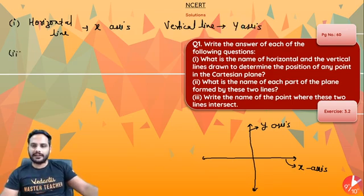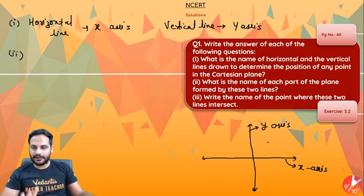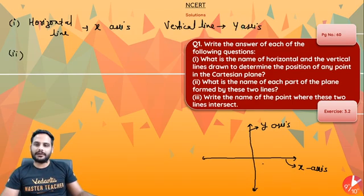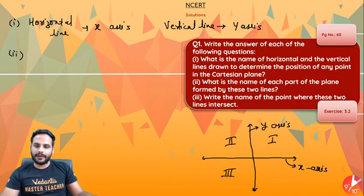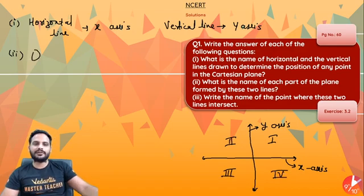Second part: what is the name of each part of the plane formed by these two lines? So these two lines divide the plane into four parts, and the name of these four parts is quadrants.